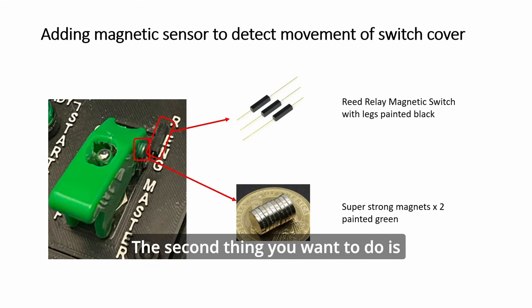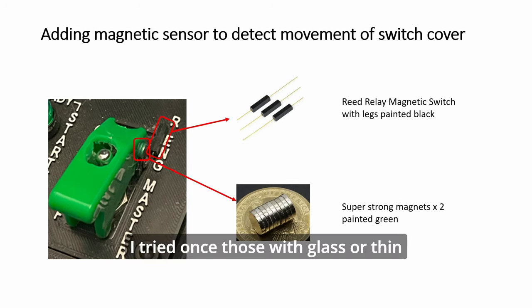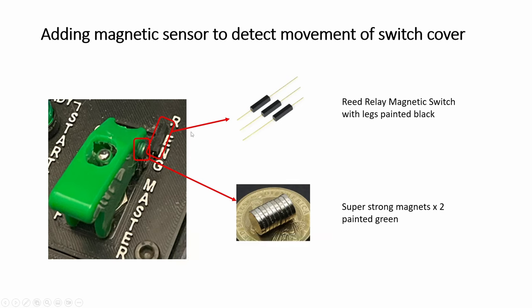The second thing you want to do is there's a DCS BIOS code to detect the opening and closing of the cover. So what you need is a reed relay magnetic switch. I tried once those with glass or thin plastic before they break even at the touch. So this is more robust and you just drill two tiny holes and stick it into the panel and at the bottom just have one plus one minus to the Arduino.